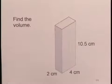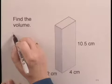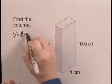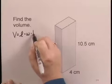For this exercise, we'll find the volume of a rectangular solid. We'll begin by writing the formula for the volume. The volume V is the length times the width times the height.